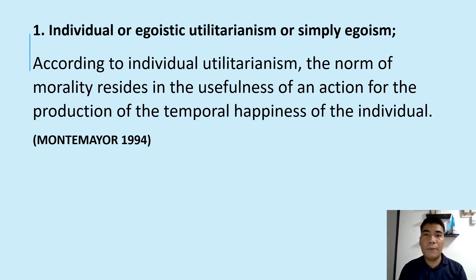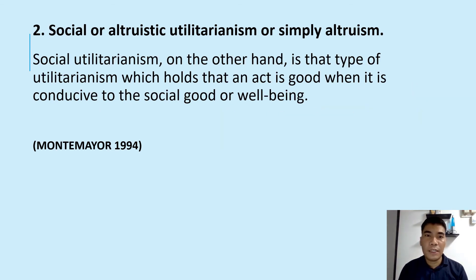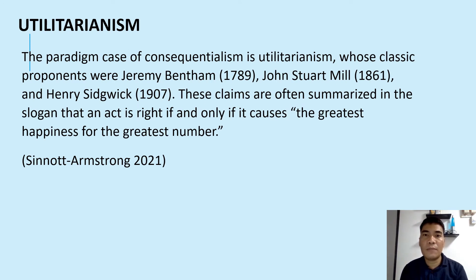According to individual utilitarianism, the norm of morality resides in the usefulness of an action for the production of temporal happiness of the individual. An act is good when it redounds to the temporal welfare and happiness of the individual, and bad if it hinders this happiness. Social utilitarianism, on the other hand, holds that an act is good when it is conducive to the social good or well-being — this is called altruism as distinguished from egoism. The individual type is related to physical pleasure and to hedonism, while the social type is related to mental pleasure and to the real sense of utilitarianism.